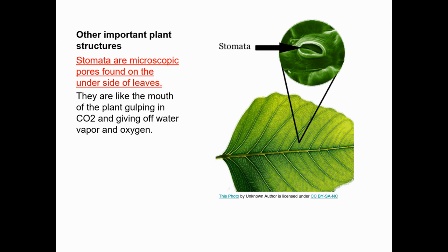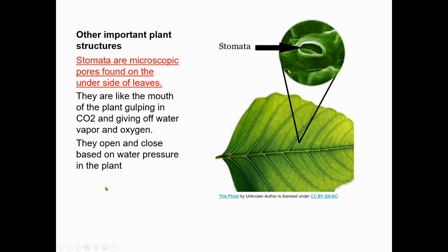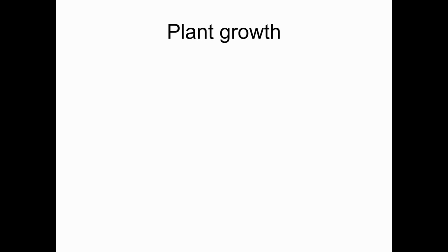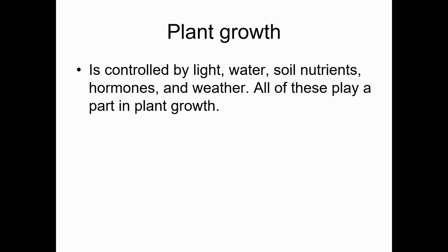Another really important plant structure is the stomata, found on the leaves and sometimes stems of plants. They're like little mouths on a leaf — you can sometimes see them on pine trees. They take in carbon dioxide and give off water vapor and oxygen, and they open and close based on water pressure in the plant. If you don't have enough water pressure, your stomata will be closed, which means you can't take in carbon dioxide and can't do photosynthesis.